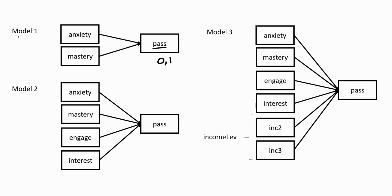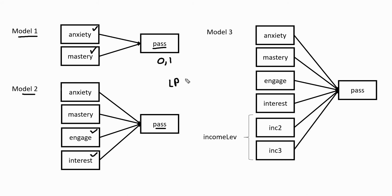Our first model, Model 1, contains two predictors: anxiety and mastery goals, predicting the probability of a student passing a test. In Model 2, we add in two additional predictors — student engagement and student interest — alongside anxiety and mastery goals, giving us four predictors total. Model 1 is a subset of Model 2, meaning Model 1 is nested within Model 2. One of the things we do in hierarchical regression is test whether the additional variables included result in a significant improvement in model fit. The test we'll use for that is the likelihood ratio chi-square test.